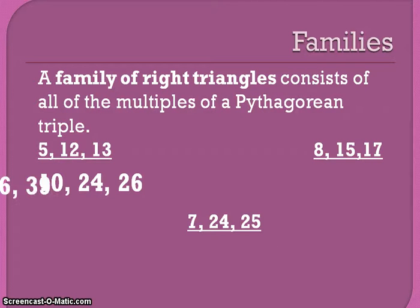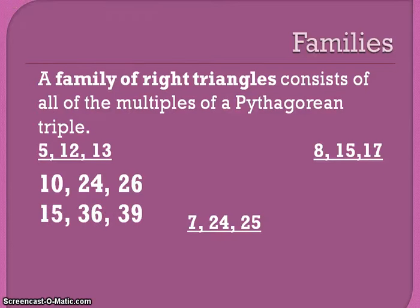If I multiplied by 3, I'd have a (15, 36, 39) triangle. Similarly, with (7, 24, 25), if I multiplied by 2, I'd have (14, 48, 50).